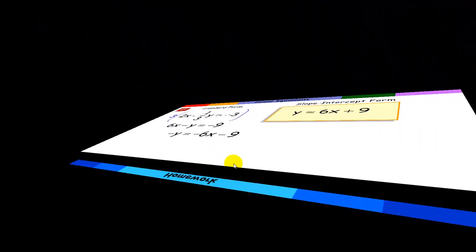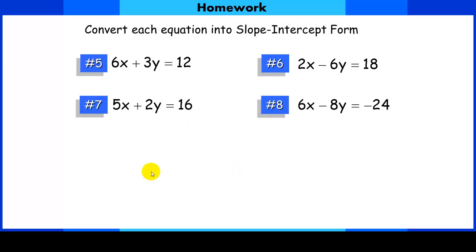Okay. Hi. We have four more problems to do. Please do these on your own. And we'll check these in class tomorrow. Remember, each one of these will be converting into slope-intercept form. So pause this. Take your time. Write them down. And I will see you tomorrow.